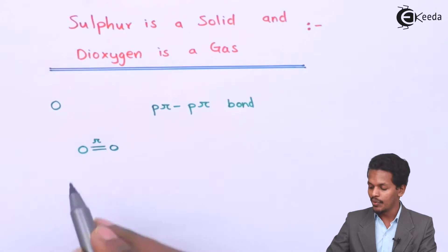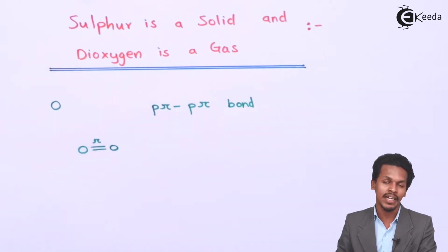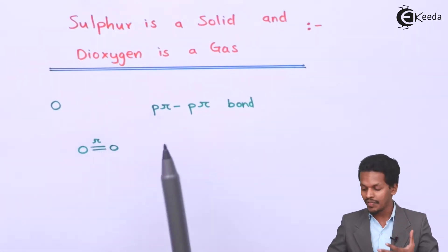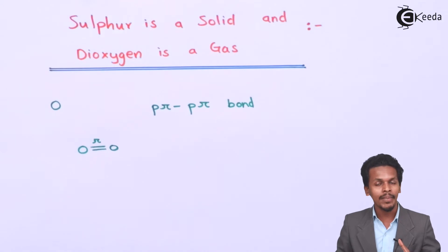This is the structure where we can find the presence of a pi bond between this oxygen atom and this oxygen atom. And because of this force of attraction and the P-pi P-pi bond between them...